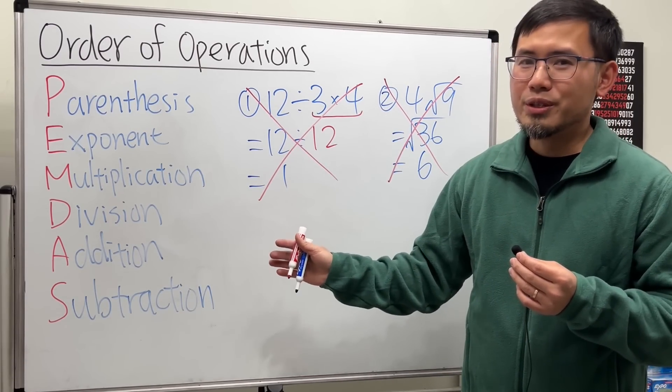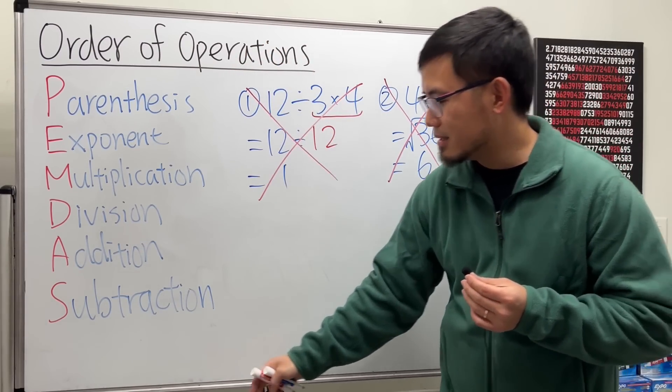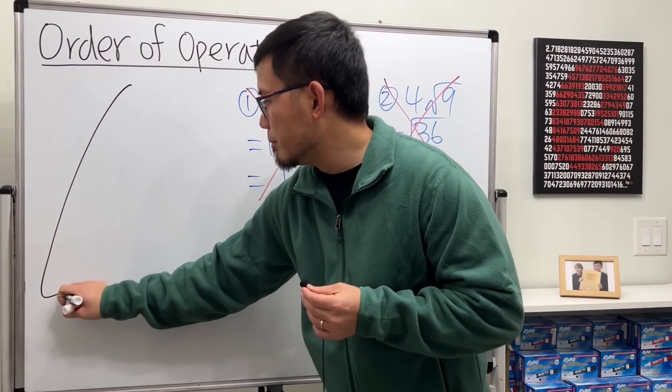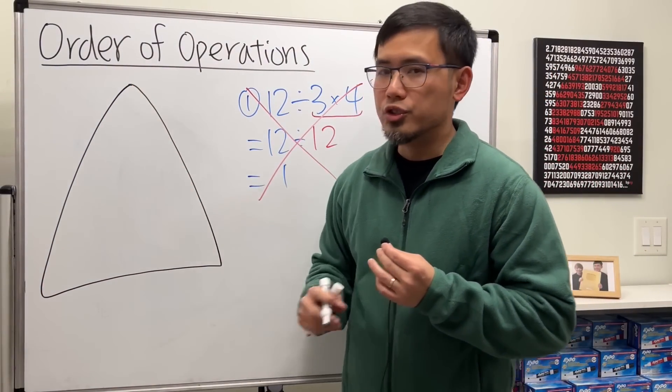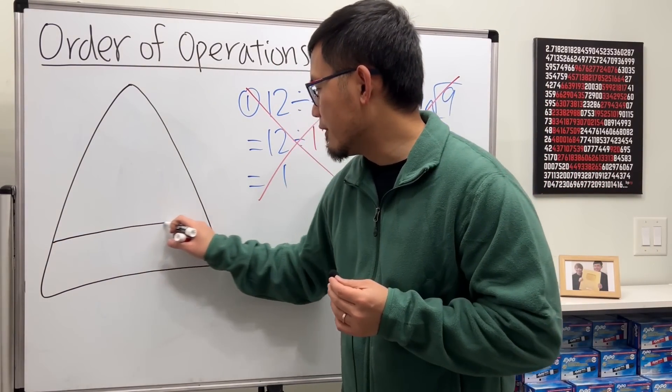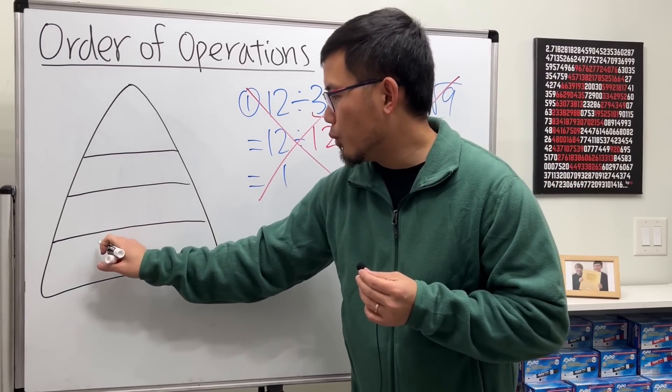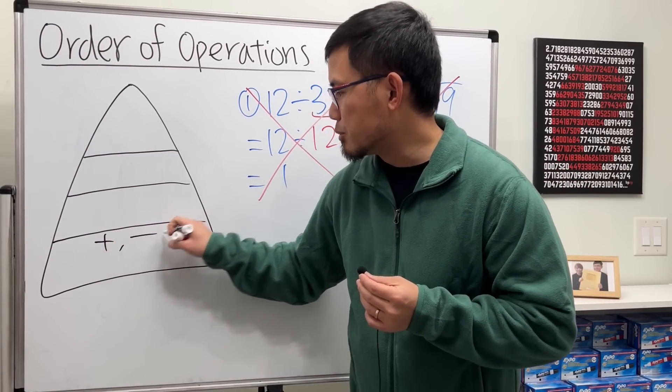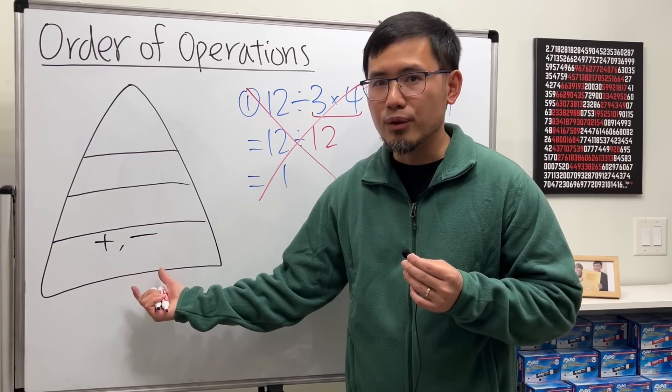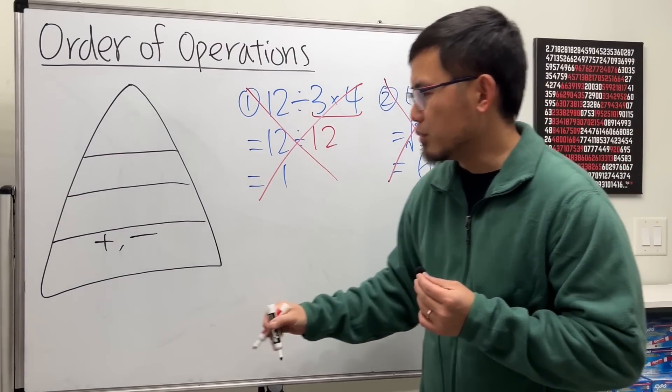So let me show you how I personally teach the order of operations. I'll first begin by drawing a pyramid, because this will show you clearly that we have different levels—in fact we have 4 levels. The bottom level, we have addition and subtraction, and that's what I meant by they are on the same level. When you see them together in your math question, you just do it from left to right.